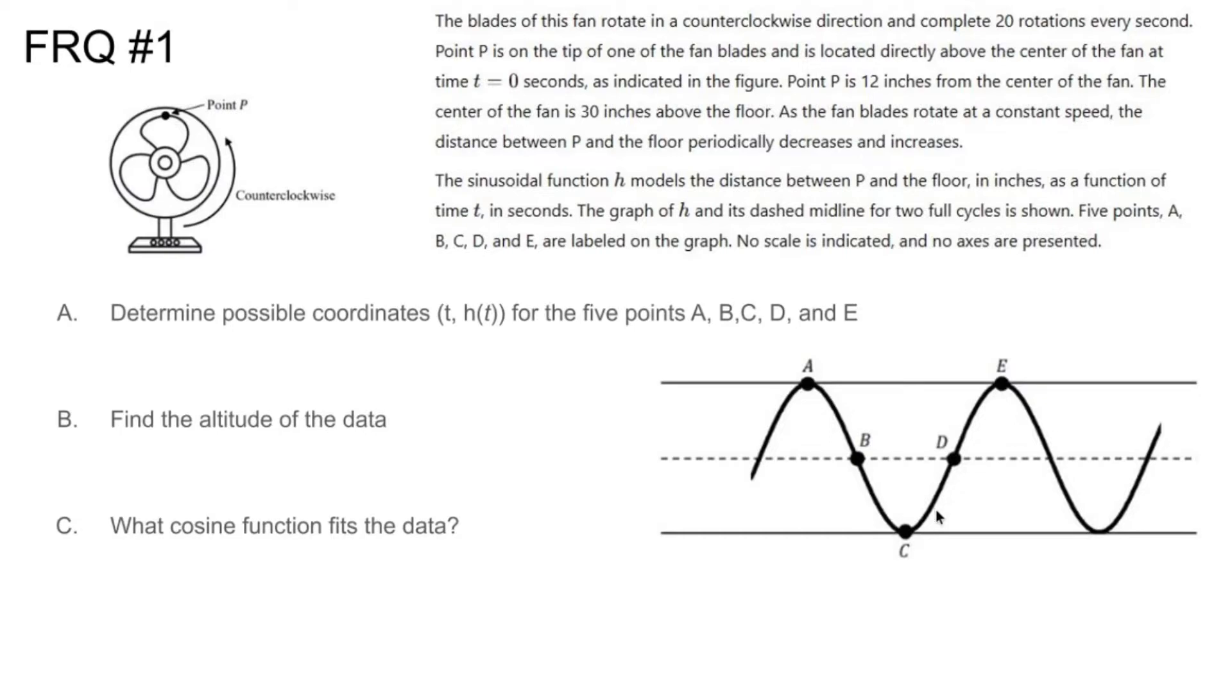Right now we're at the very beginning. It's at the top, then the middle, then the bottom, then the middle, then the top, spinning around. The sinusoidal function H models the distance between P and the floor in inches as a function of time t in seconds. The graph of H and its dashed midline for two full cycles are shown. Five points A through E are labeled on the graph. No scale is indicated and no axes are presented.